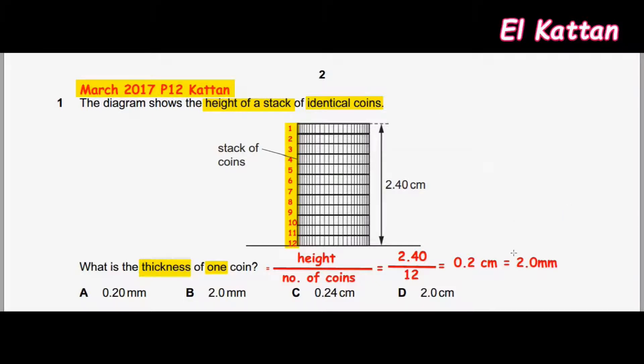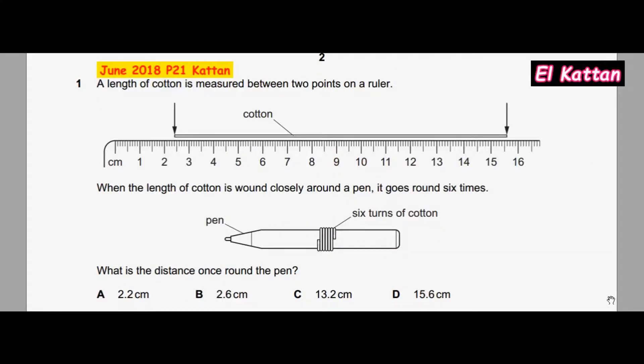The correct answer is B. A length of cotton is measured between two points on a ruler.